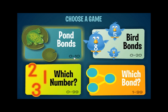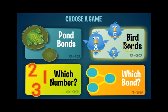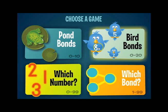Students here are dragging frogs to complete the number bond. Then there's Bird Bonds, which addresses numbers 0 to 20 — a little more challenging. We still have a concrete aspect to the game with the birds, but we've also added in the numeral as an abstract representation of the number.